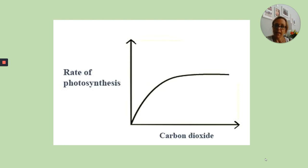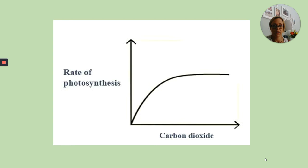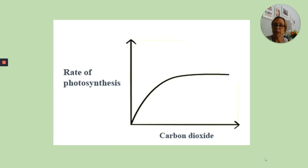We have a similar-shaped graph for carbon dioxide. Carbon dioxide is also a limiting factor for photosynthesis, because even if the temperature is optimum and the plant has plenty of light, if the concentration of carbon dioxide is limited and not increased, then carbon dioxide will limit the amount of photosynthesis that can take place, and it will not allow the rate of photosynthesis to increase beyond a certain level.